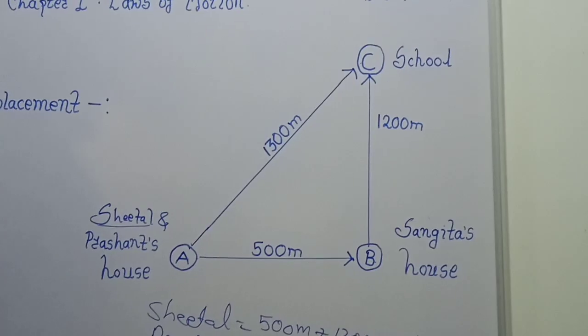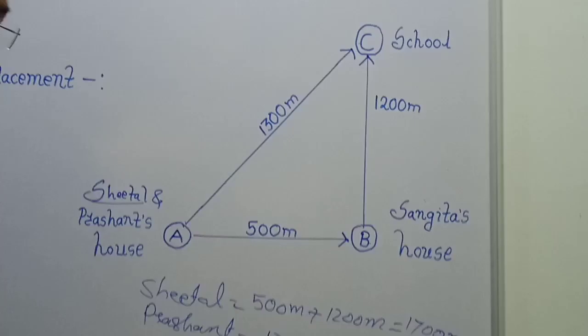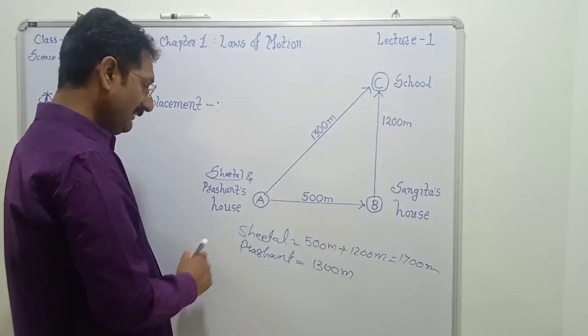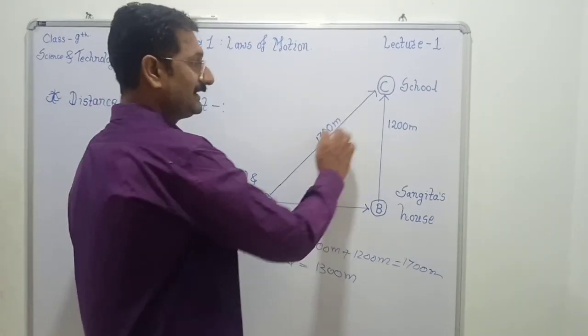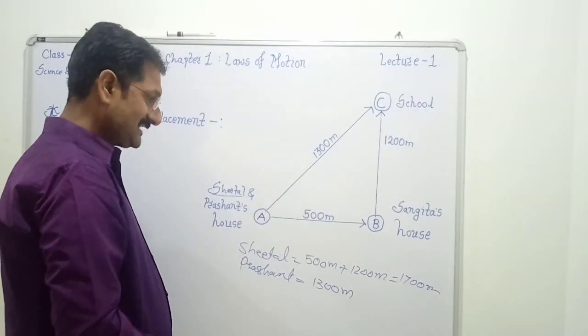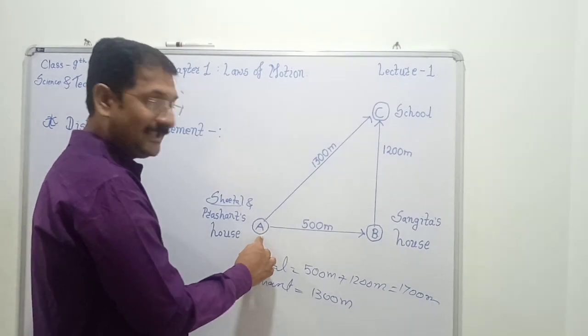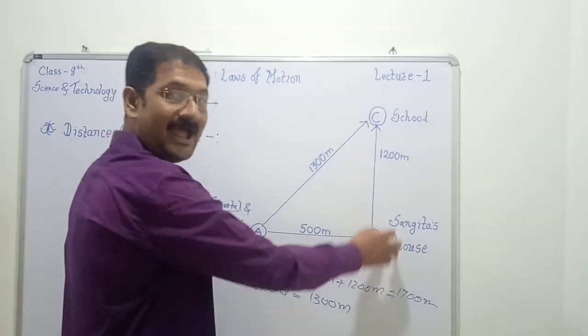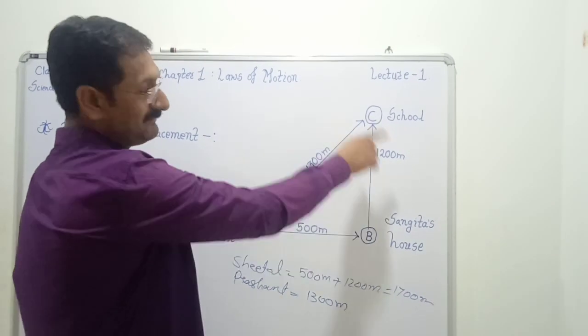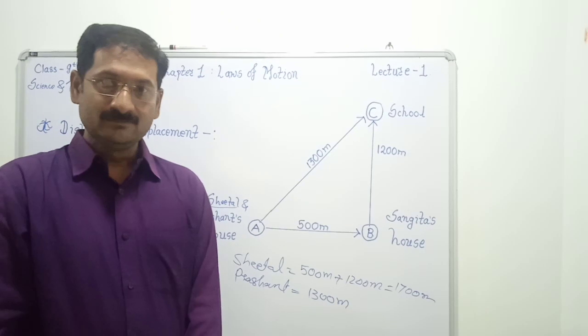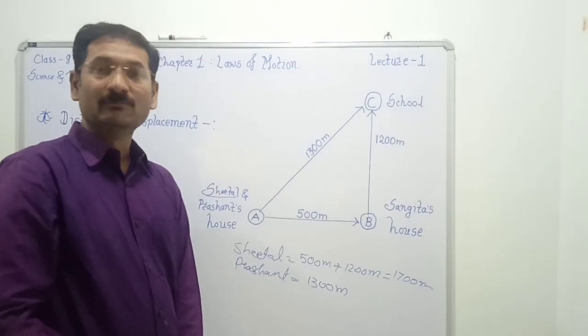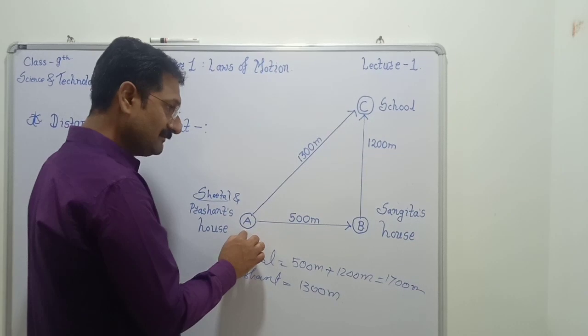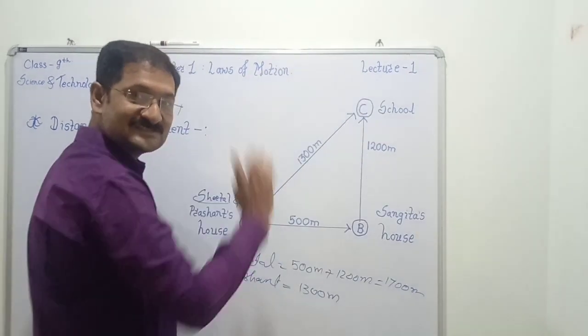If we observe this example, then we conclude that the actual path followed by Shital is 1700 meter and the actual path followed by Prashant is 1300 meter. But the distance covered by Prashant is the shortest distance between the initial point A and final point C. The distance covered by Shital is from A to B and B to C. From this observation, it is concluded that the concept distance is the actual path followed by the body.